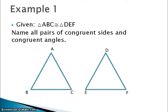So here I have angle A congruent to angle D based on my statement. I have angle B congruent to angle E based on my statement. I also know that AB is congruent to DE, BC is congruent to EF.